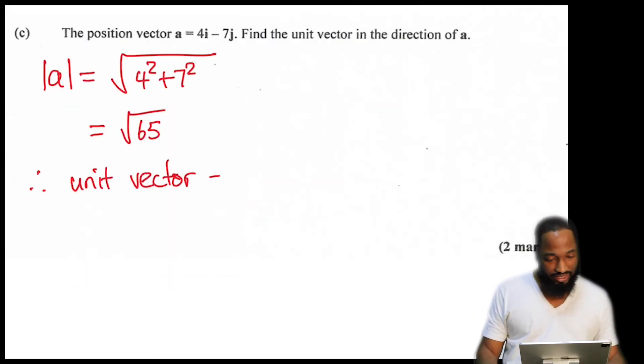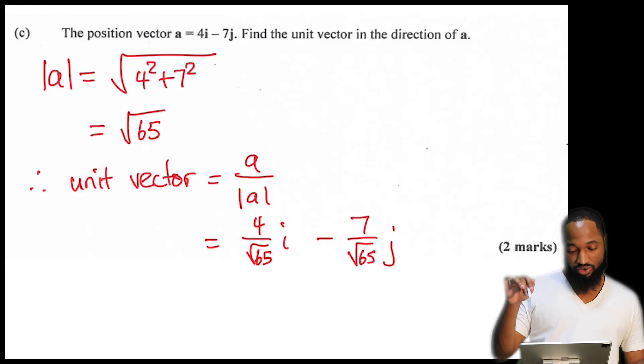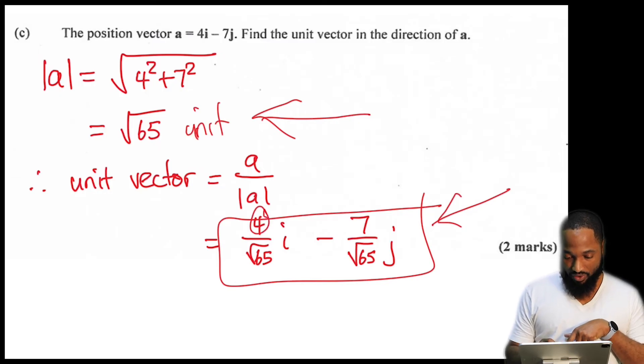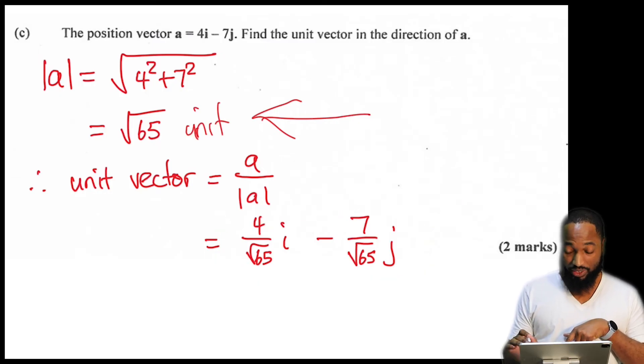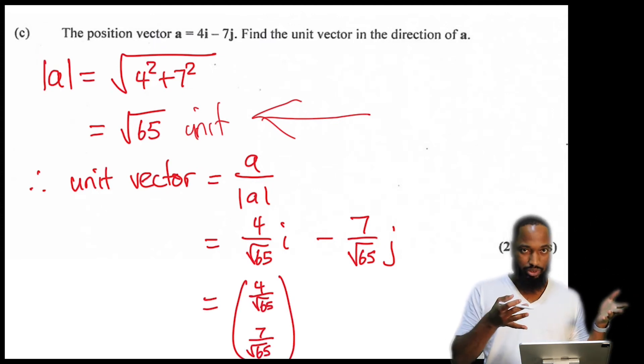This is Part C. The position vector is this. Find the unit vector. Remember, I tell you, they could sneak this in for one or two marks. There it has been snuck in. So we are going to get the square root of 4 squared plus 7 squared. We got the magnitude here. Once you get the magnitude, you divide by your magnitude to get your vector in the direction, your unit vector. This is just one way of writing it. Notice how we put the 4 over the magnitude of the square root of 65. This is another way of writing it as well, which you may be more familiar with.